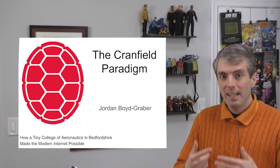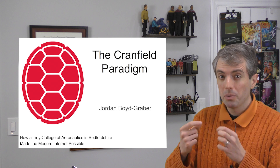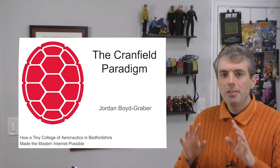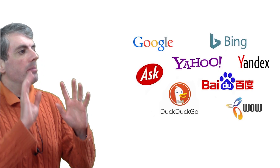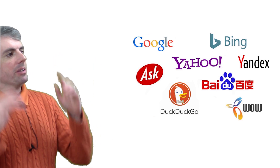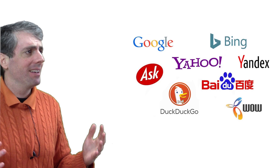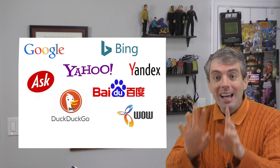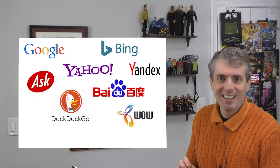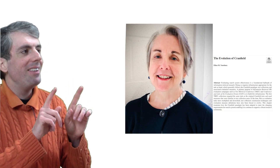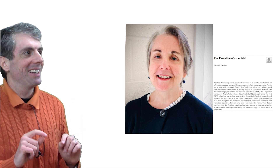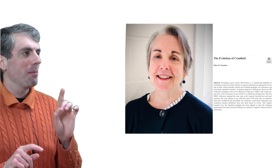Often, when I talk about search engines and how to build the information retrieval systems behind them, these ubiquitous portals to the internet — whether you're using Bing, Yahoo, Baidu, or Ask Jeeves — seem like a fundamental law of science. They've always been there. But it wasn't always like that. There was a time before search engines. And although there's a certain charm to card catalogs, they're neither an efficient nor a fun way to find information. My goal in this video is to tell the story of the Cranfield paradigm, and how it made the 20th century internet possible.